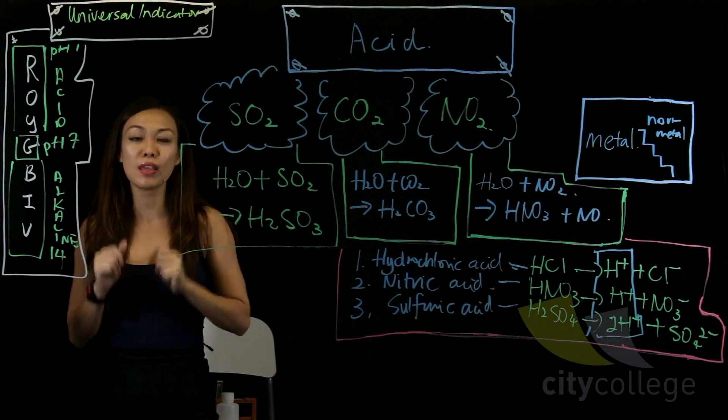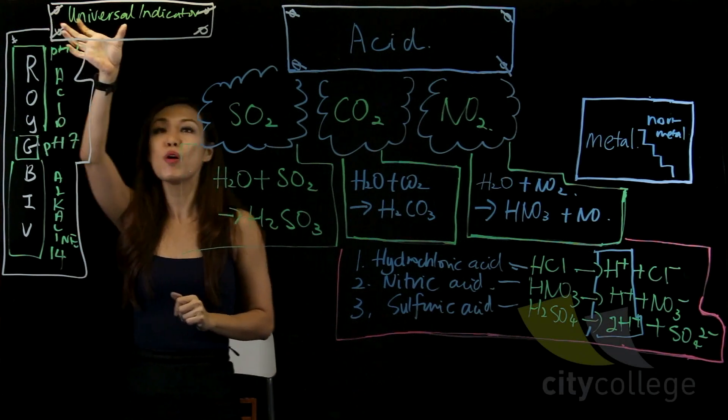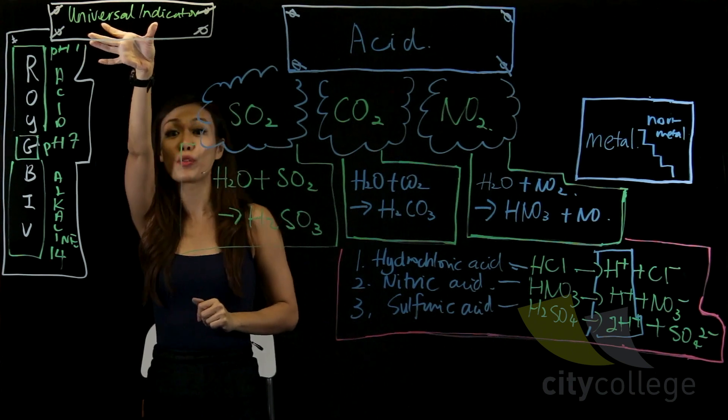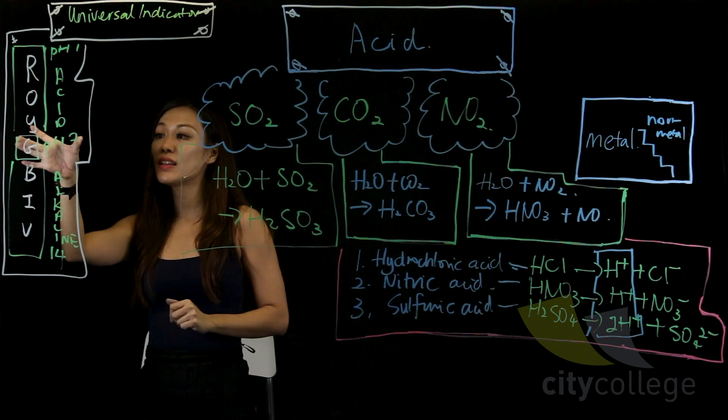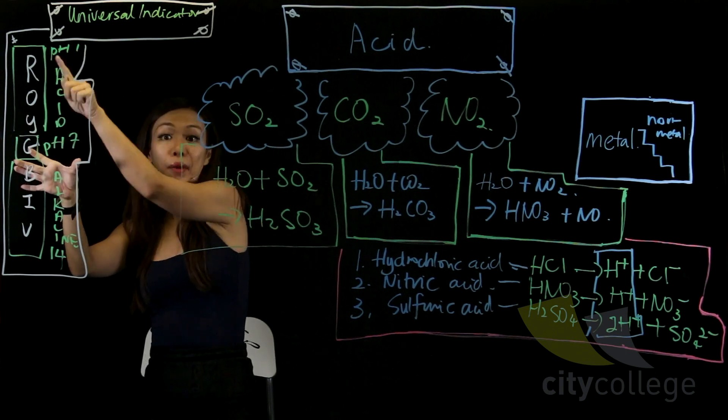Now how do you test whether something is acid? Well, one of the most common things is of course to use your universal indicator. Universal indicator shows here that if it's acid, you will see a red in color.